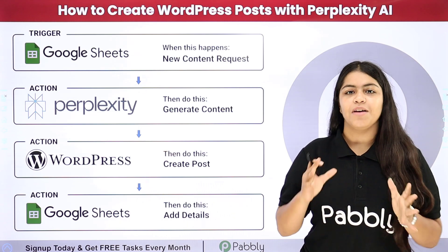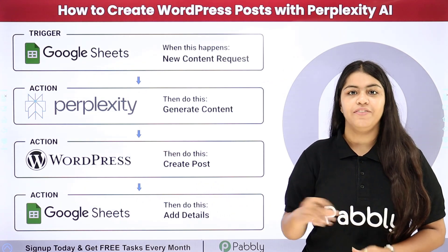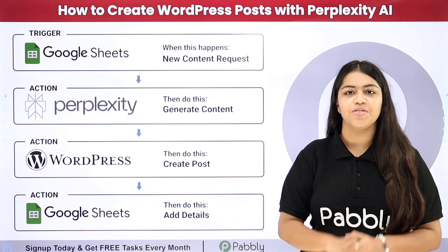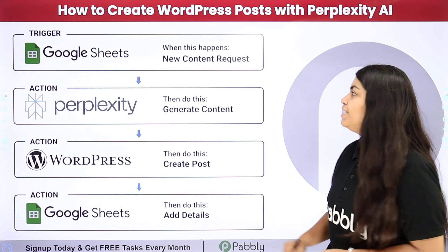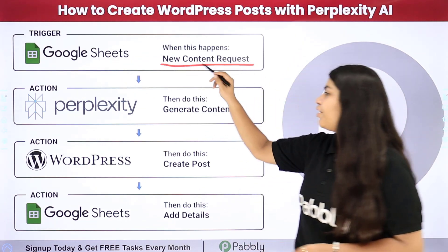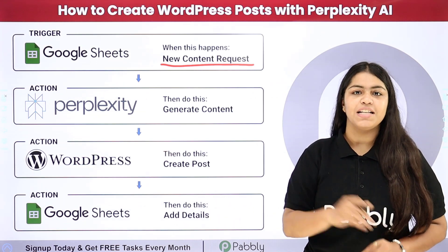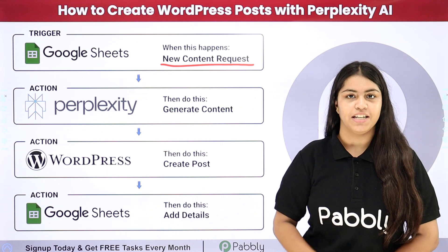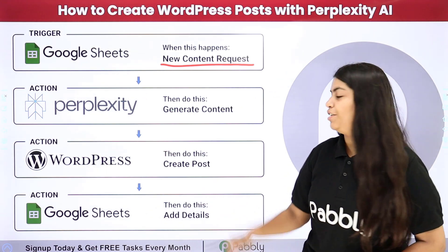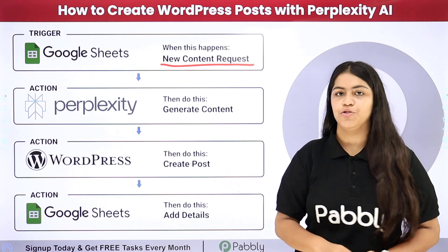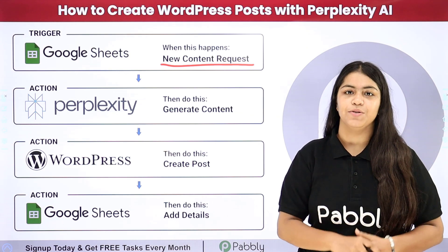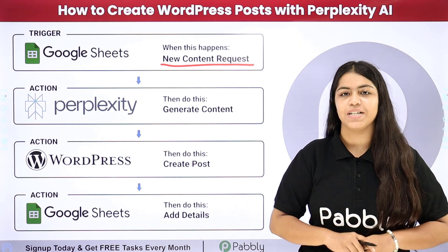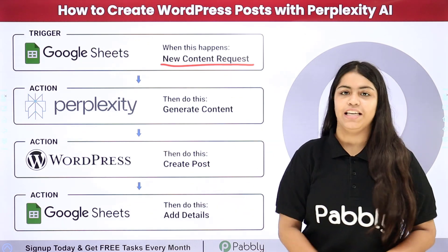I am running an e-commerce store and we regularly post on our WordPress account. To streamline this process, I want that as soon as I add a new content request in my Google Sheets, automatically Perplexity AI should generate the content, a new WordPress post should be created, and the post link should be added back to my Google Sheets.